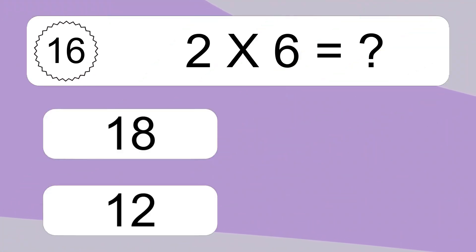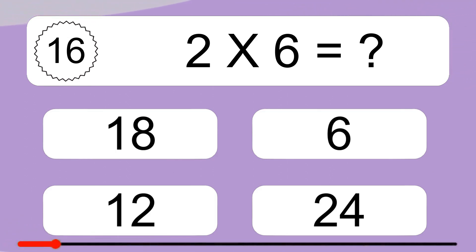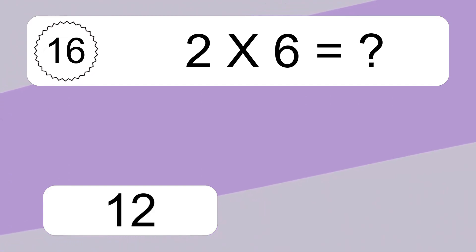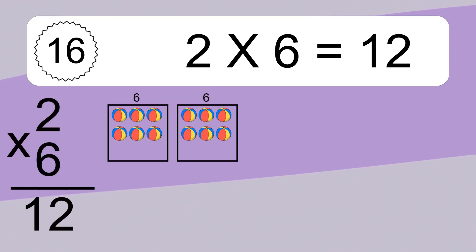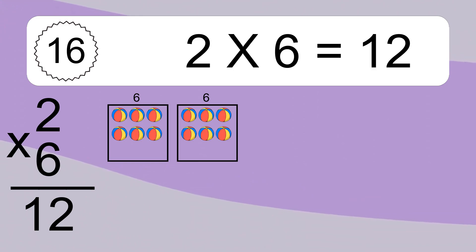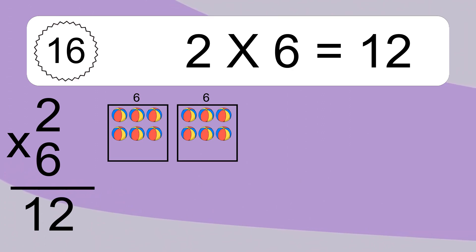2 times 6 equals what? 2 times 6 equals 12. We have 2 boxes and each box has 6 colorful balls inside. If you count all the balls in all the boxes together, you will have 2 times 6 balls. This equals 12 balls.